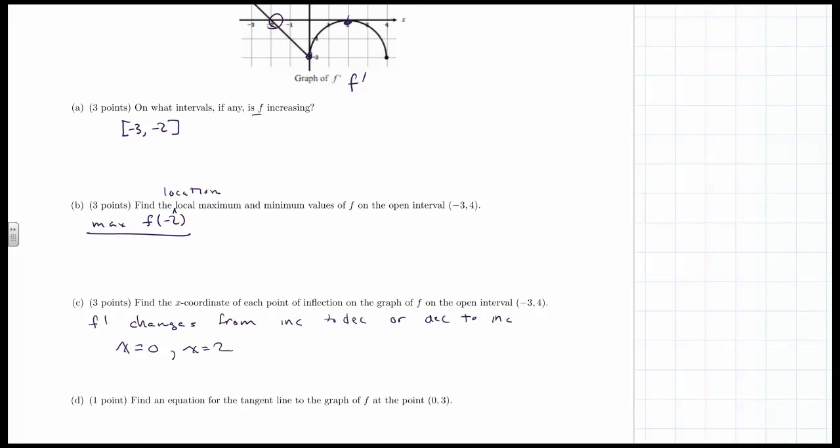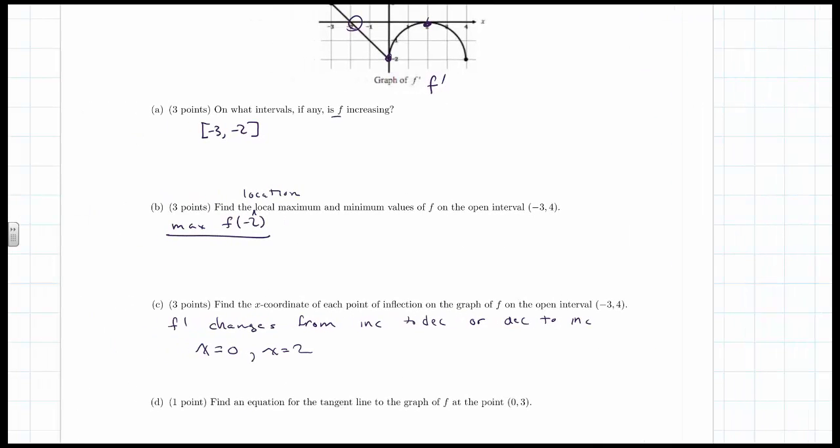Find the equation of the tangent line at the point zero three. Well, for a tangent line, we need a point and we need a slope. So we have to ask the question, well, what is f of zero? Well, it looks like f of zero is equal to negative two. So therefore, our tangent line must be three plus negative two times the quantity x minus zero.